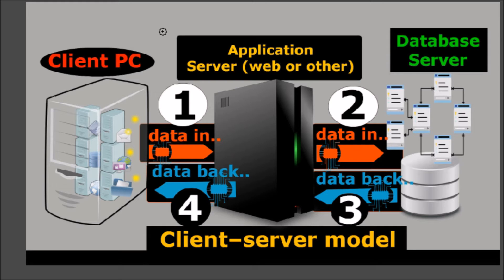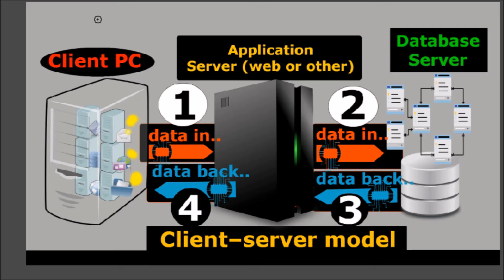The client-server model can be used in a few different things — for example, emails, things that you normally access on the internet, or even just file servers. These are the types of things where the client-server model is implemented. We will talk about some real examples, so let's say you have a bank account that you access on a regular basis over the internet.